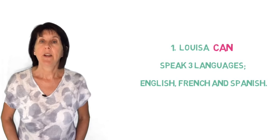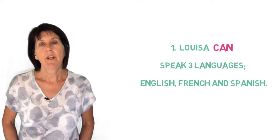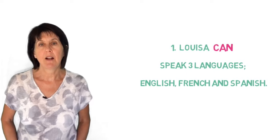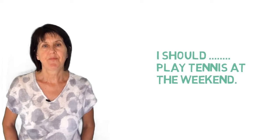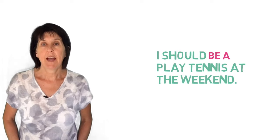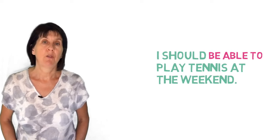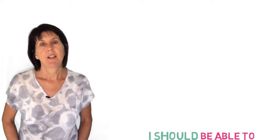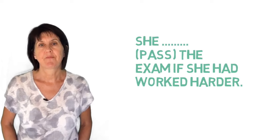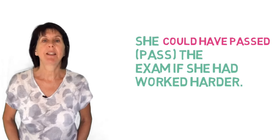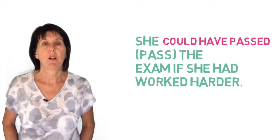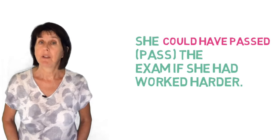Can. We use can for general abilities and skills. We could use is able to here as well but it's more formal. Two: I should blank play tennis at the weekend. Be able to — we use be able to after modal verbs. Three: she blanked the exam if she had worked harder. Could have passed. We use could plus have plus the past participle for things that you had the opportunity to do but didn't do.